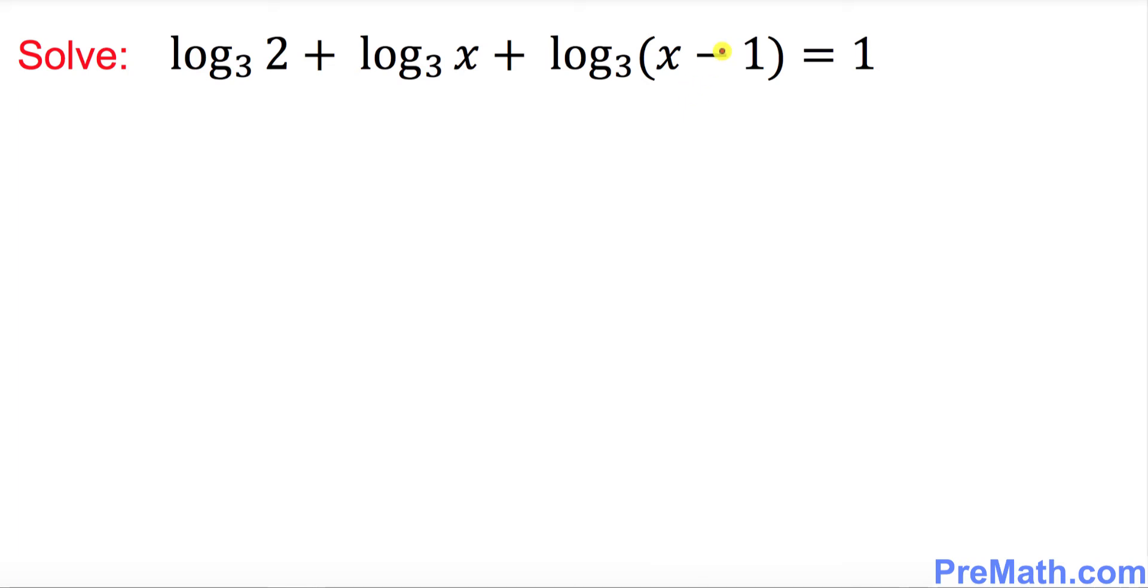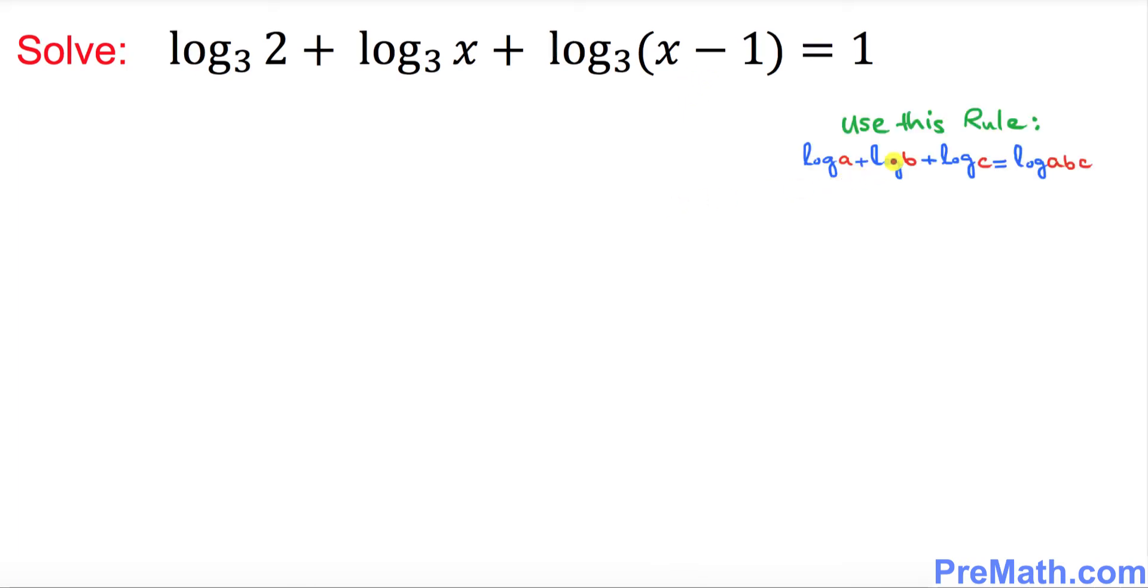We will be using this rule to compress our left hand side. Here this is our a, this is our b, and this part is our c. As long as there's a plus sign, you multiply them out.